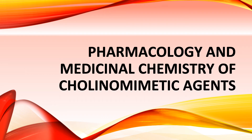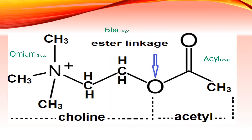Here is the structure of acetylcholine, divided into three parts: the onium portion, which has the nitrogen with four methyl group attachments; the ester linkage or ester bridge; and the acyl group. The acetyl part is on the right side and the choline part is on the left side, which is why it is called acetylcholine. When deactivated by acetylcholinesterase, it is divided into acetate and choline, and the choline is recycled.